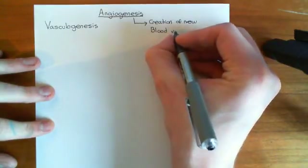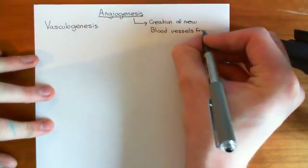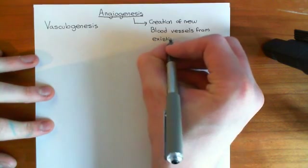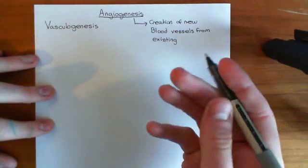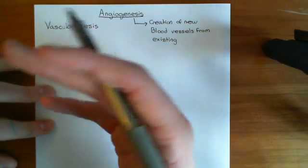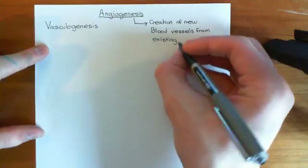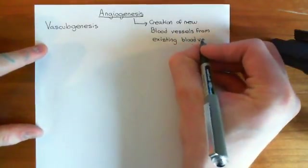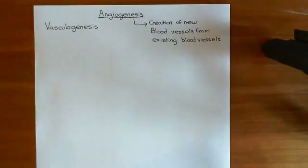Specifically, angiogenesis is the creation of new blood vessels from existing blood vessels. Whereas vasculogenesis - 'vasculo' pertaining to the vascular system, 'genesis' meaning creation - is just the creation of blood vessels without requiring them to be made from existing blood vessels. That is the key difference between vasculogenesis and angiogenesis.